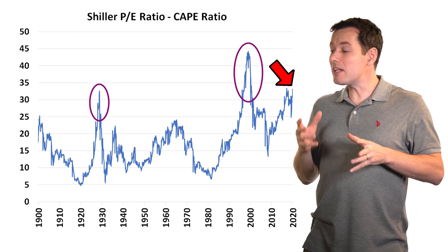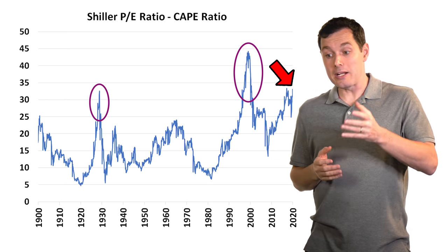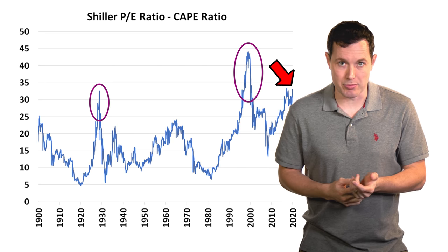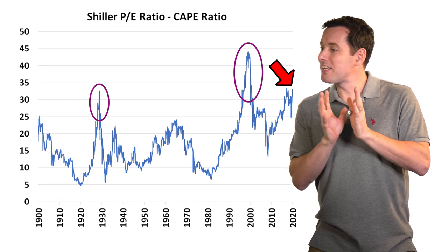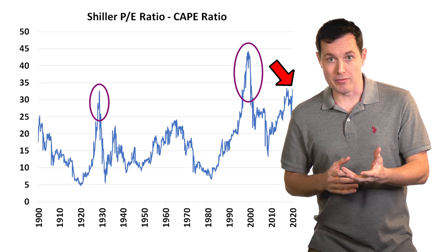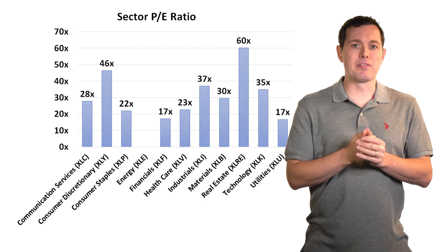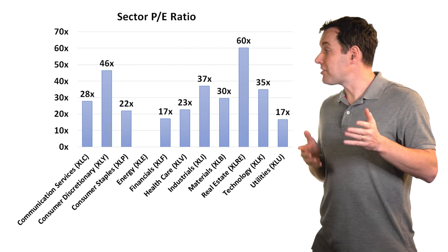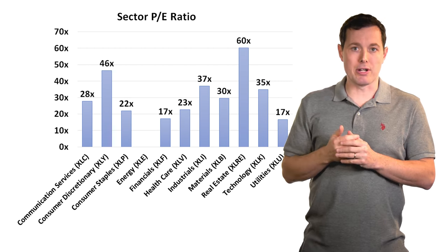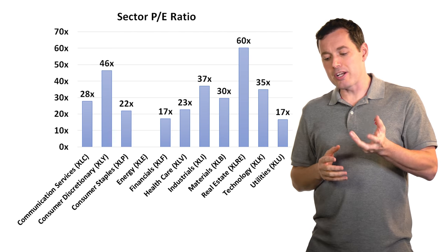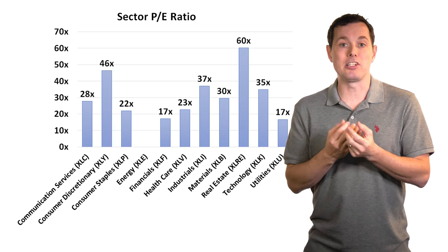According to each of the three indicators we looked at, the stock market appears to be very overvalued right now — I would even say crazy overvalued. But that does not necessarily mean that all sectors are overvalued or that every stock is overpriced. Here's some data I found for the 11 main sectors with their P.E. ratios. I should point out that P.E. ratios really aren't that useful for some sectors.